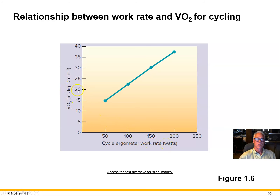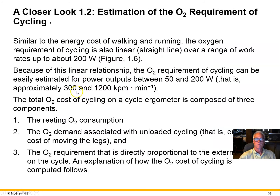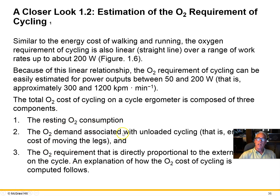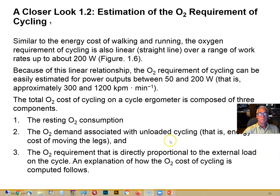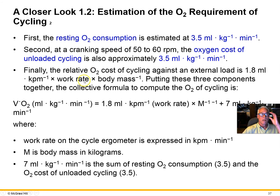For cycling, the relationship between cycling rate in watts and oxygen consumption is also linear. The equation has three terms: the resting oxygen consumption, plus the energy cost of unloaded cycling at a particular RPM — which accounts for the energy to move the legs and support heart function — plus a term pertinent to the actual rate of cycling against a load.